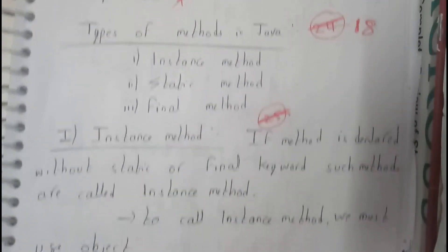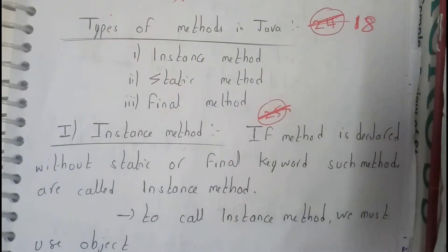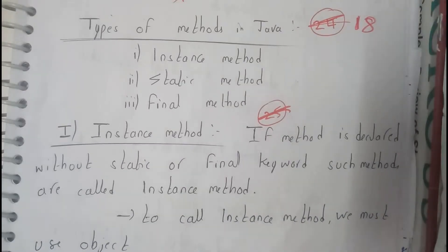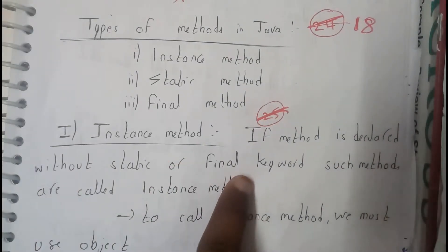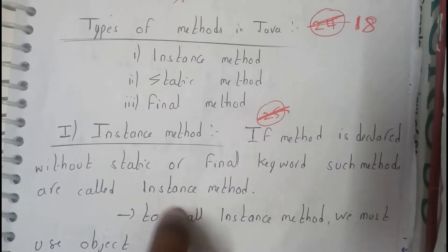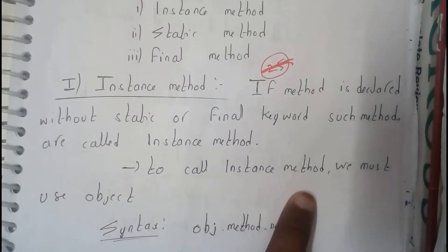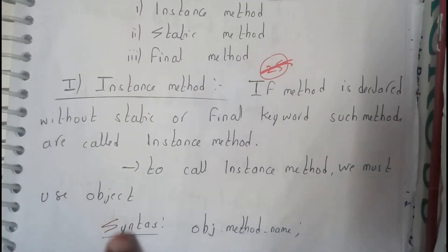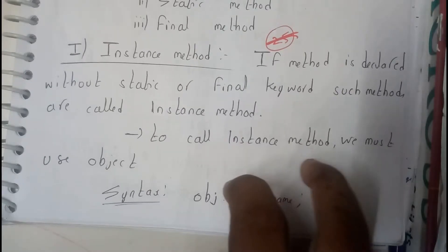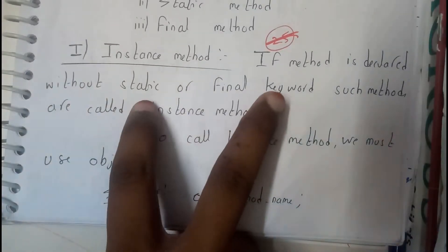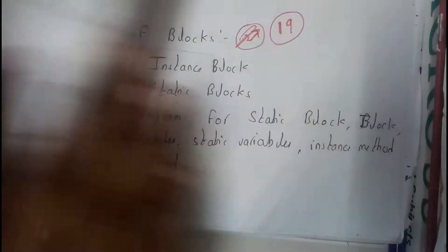First, let's go through instance methods. You can identify them if a method is not having a static keyword or a final keyword, then it comes under instance method. To call an instance method, we use object, so the format will be object.method name.